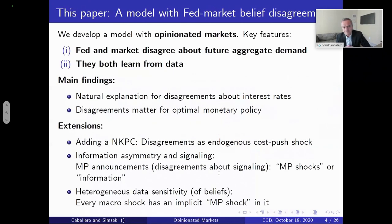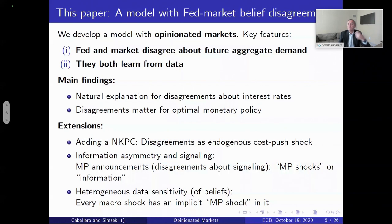So what do we do in this paper? We essentially provide a model — a theory paper — of a situation in which the Fed and the markets disagree. That's the reason we call it an 'opinionated' paper: the markets are opinionated in our model, and so is the Fed. So we develop a model with opinionated markets and opinionated Fed.